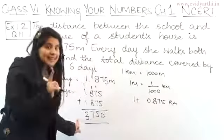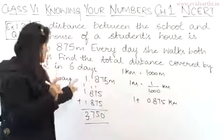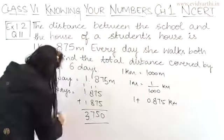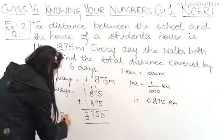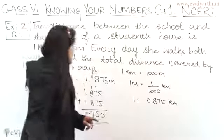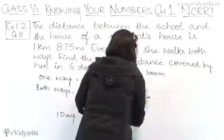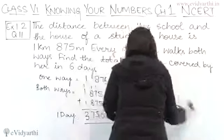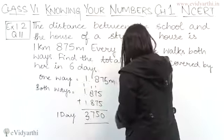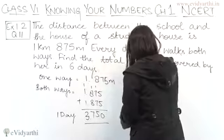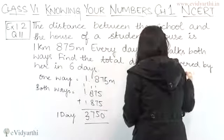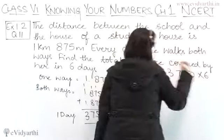So we get 3.750 km — this is the distance for one day, because she does 2 rounds each day. We have to find the total distance for 6 days, so for 6 days it will be 3.750 multiplied by 6.